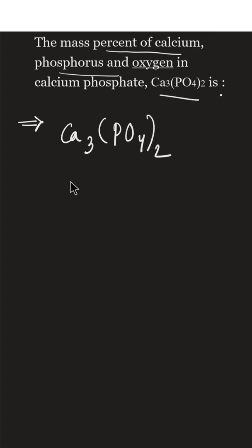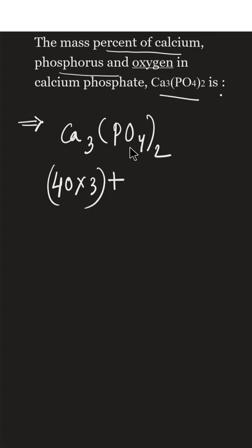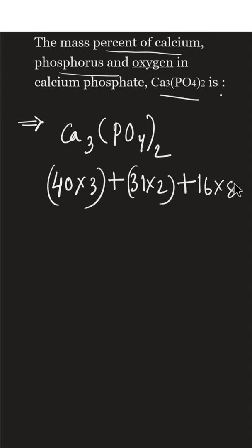The atomic mass of calcium is 40, and there are 3 calcium atoms, so that is 3 × 40. The atomic mass of phosphorus is 31 and there are 2 phosphorus atoms, so 31 × 2. For oxygen, there are 4 oxygen per phosphate group multiplied by 2, giving 8 oxygen total, so 16 × 8.